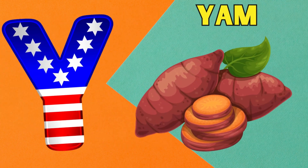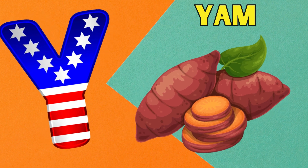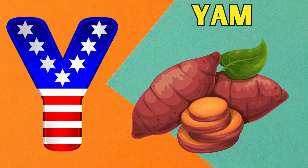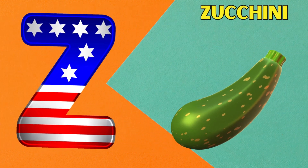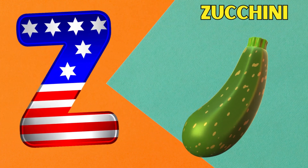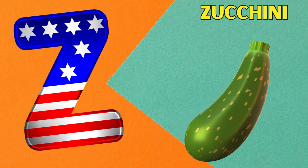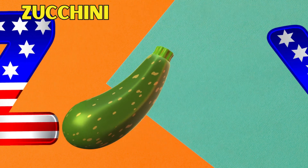Y is for yam — yuh, yam. Z is for zucchini — z, zucchini.